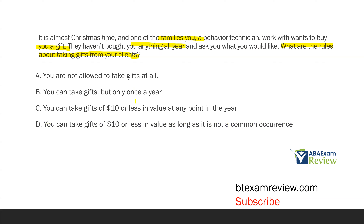C — you can take gifts of $10 or less in value at any point in the year. Your gift needs to be $10 or less, but you can't take it every day. D — you can take gifts of $10 or less in value as long as it is not a common occurrence. D is the closest to what the new ethics code says — the gift has to be $10 or less in value, and it can't be common; it can't be a regular thing.